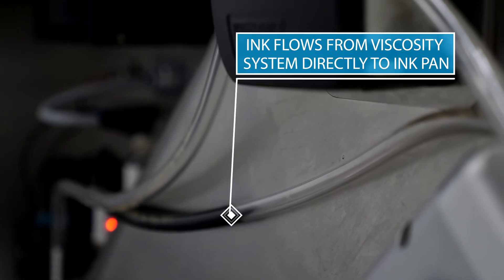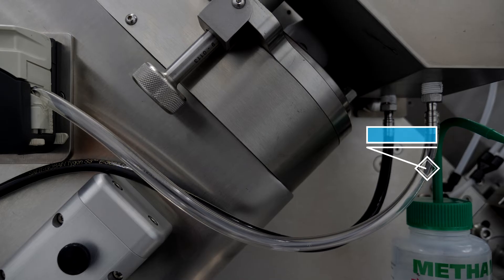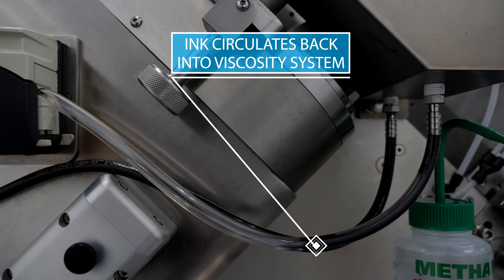When paired with options like our ink viscosity system, the ink is pumped directly into the ink pan and then recirculates back through the system where it's monitored and maintained.